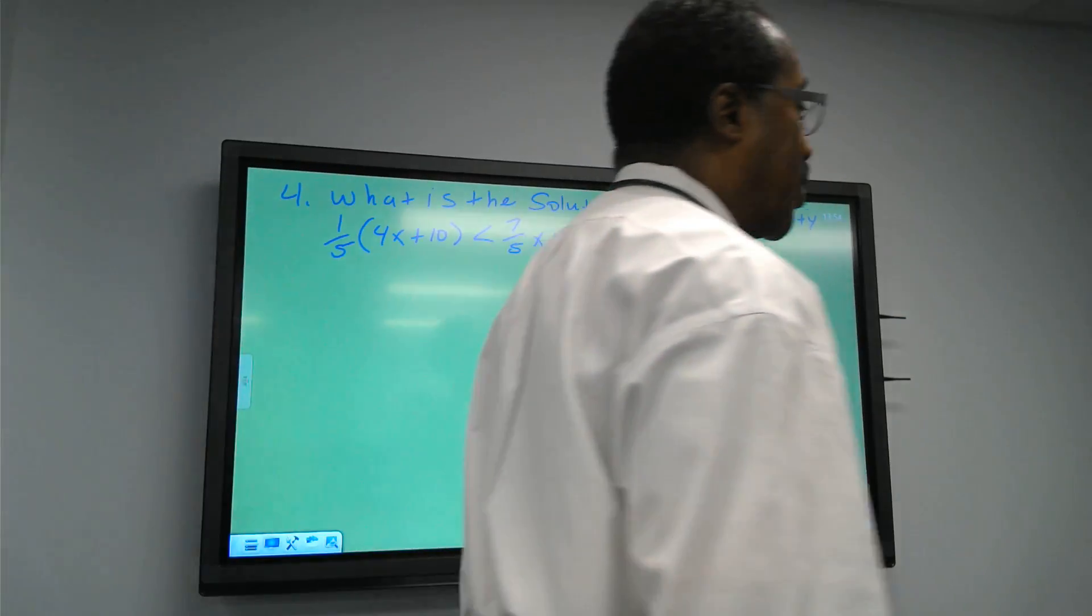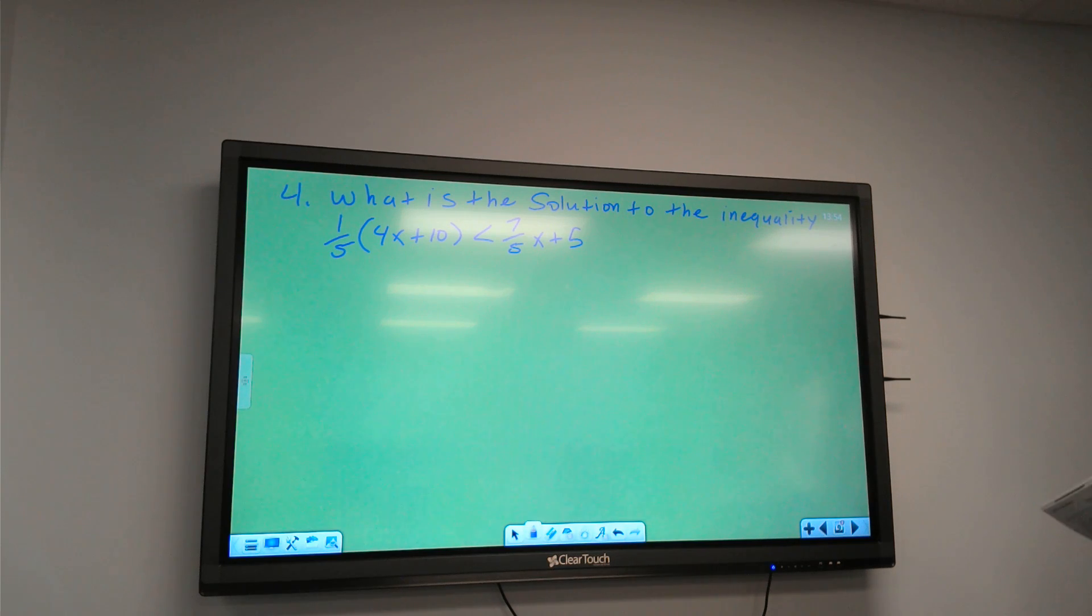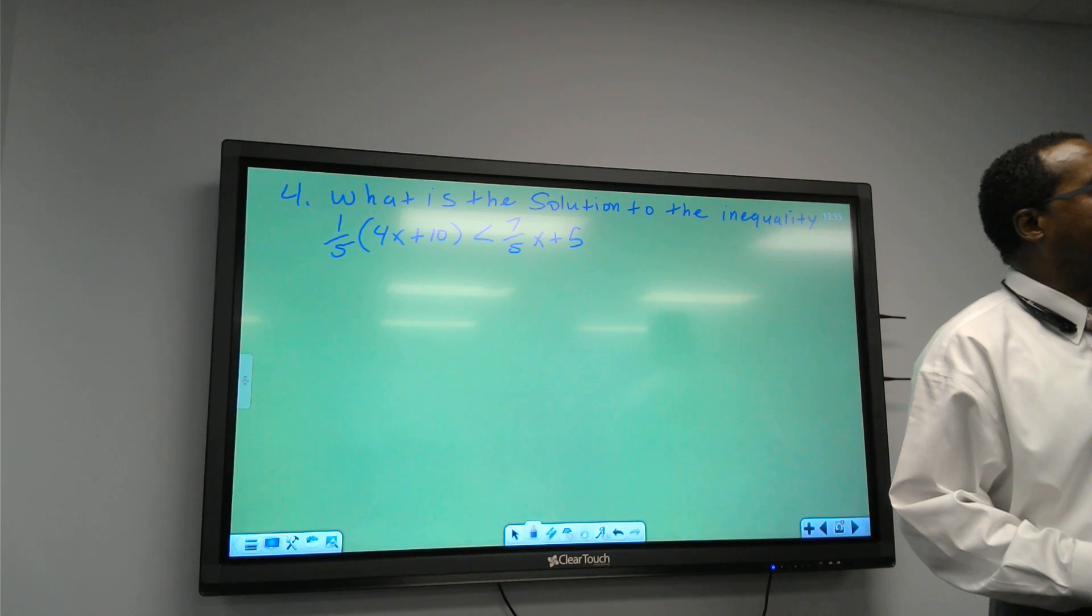Alright, here we go. What is the solution of the inequality 1/5 times the quantity 4x plus 10 is less than 7/5x plus 5? Subject 5. You multiply everything. Yes, sir.